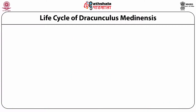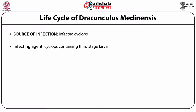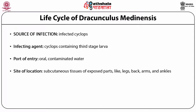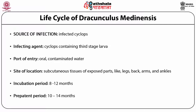In summary: the source of infection is the infected cyclops; the infecting agent is cyclops containing third stage larvae; the port of entry is oral via contaminated water; the site of localization is subcutaneous tissue of exposed parts like legs, back, arms and ankles; the incubation period is 8 to 12 months; and the pre-patent period — between infection and emergence of the female parasite in the blister — is 10 to 14 months.